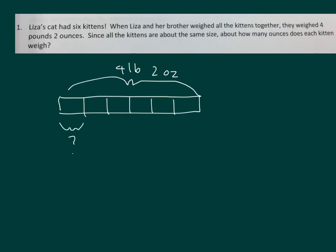So I want to know how much each kitten weighs. It will help to understand how many ounces four pounds is. So let's write that out. Four pounds equals four times one pound. I can replace that with four times 16 ounces, because there's 16 ounces in a pound. Four times 16 is 64. So that's 64 ounces.